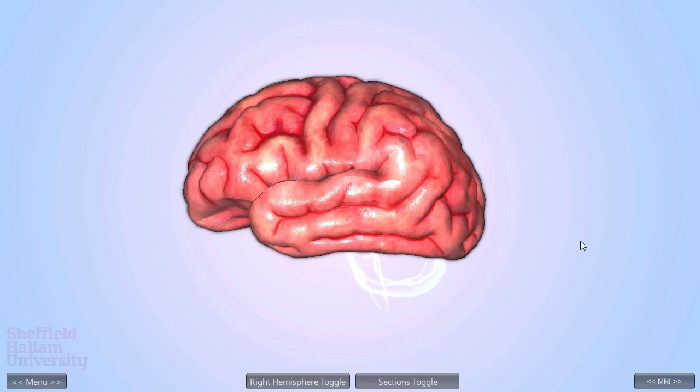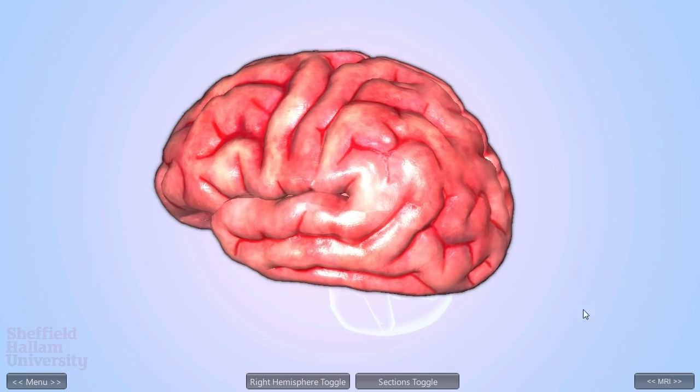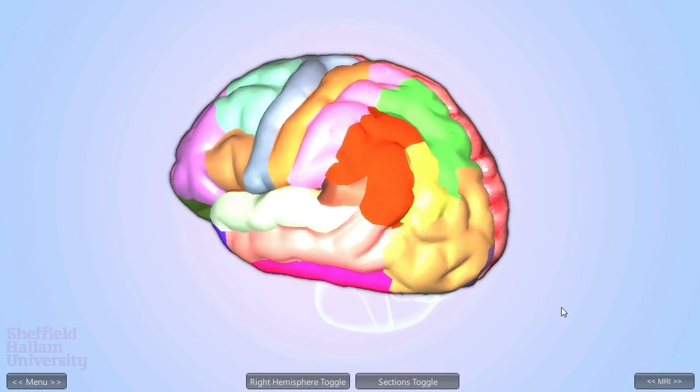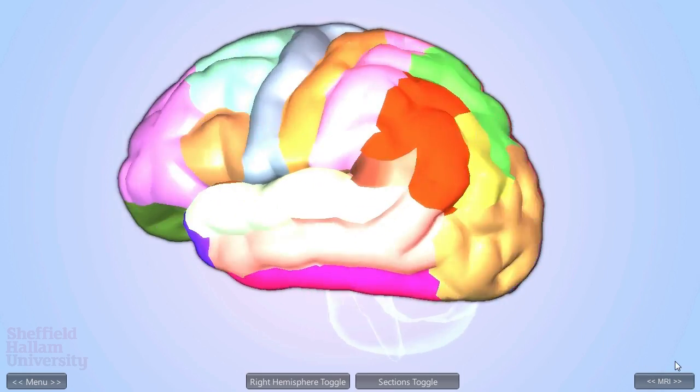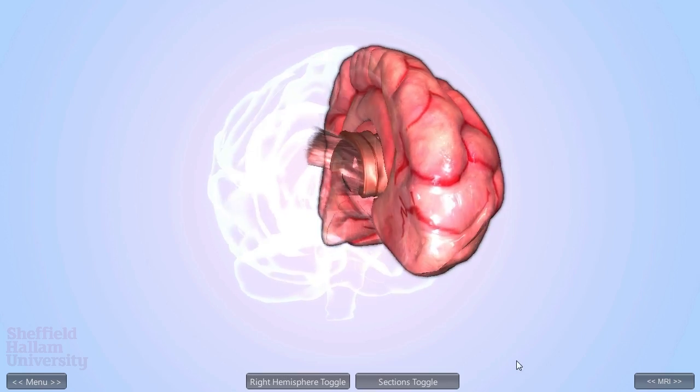The cerebrum is the largest region of the brain. This is divided into two parts, known as the left and right hemispheres. The two hemispheres communicate and are connected via the corpus callosum.